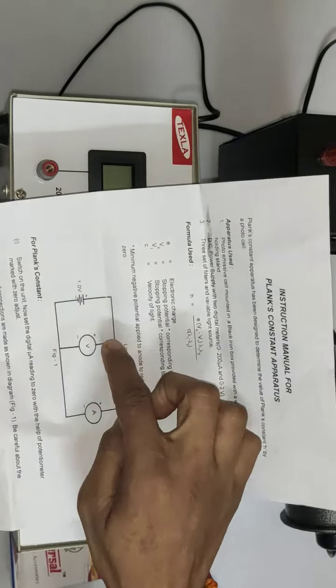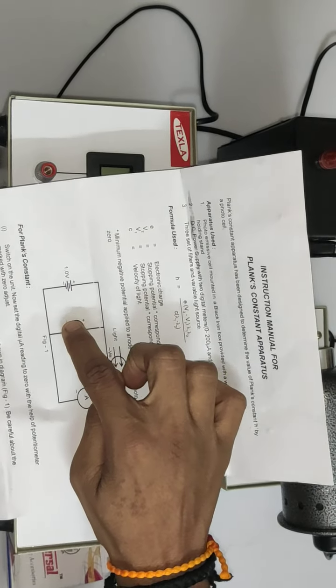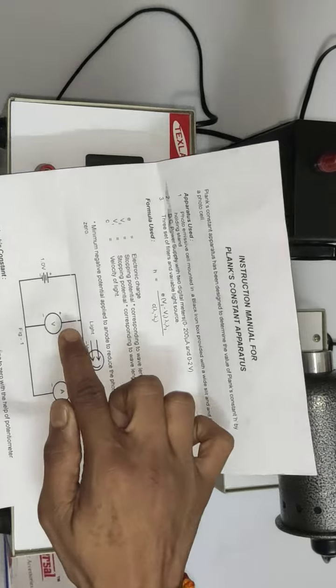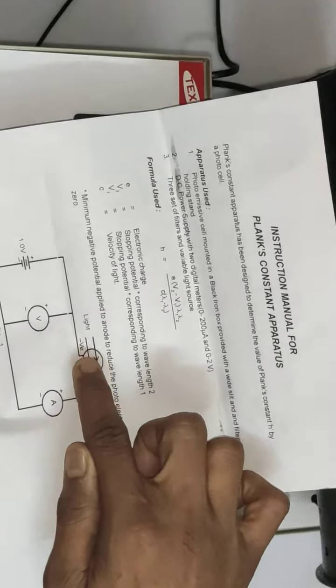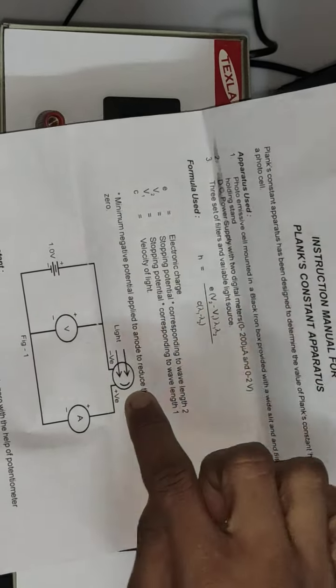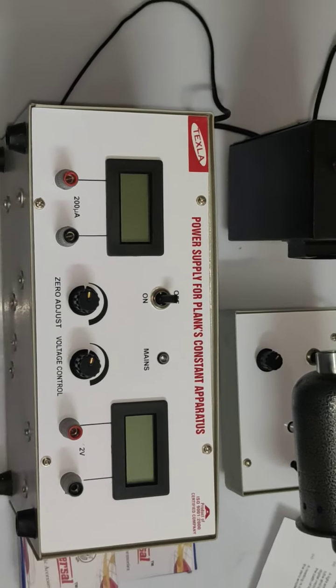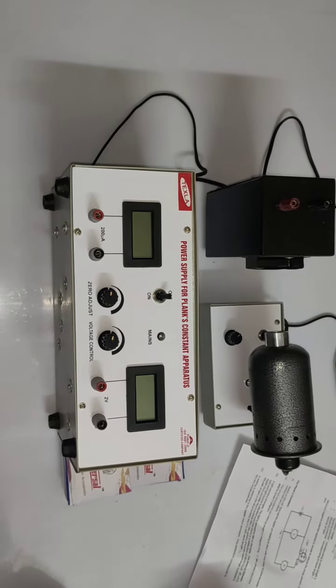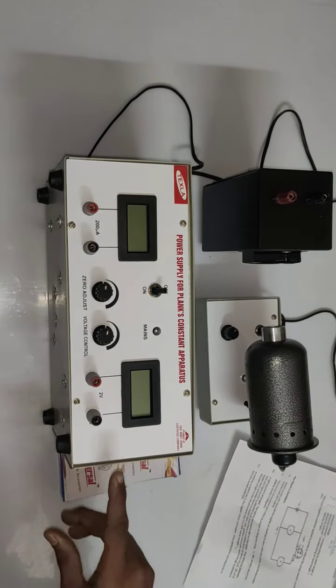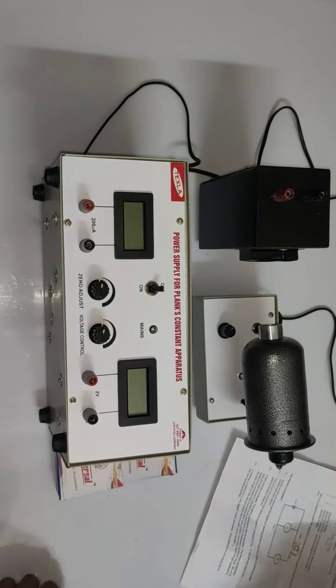We have to connect voltmeter negative to ammeter negative. Voltmeter positive is given to cell negative. Cell positive is given to ammeter positive.